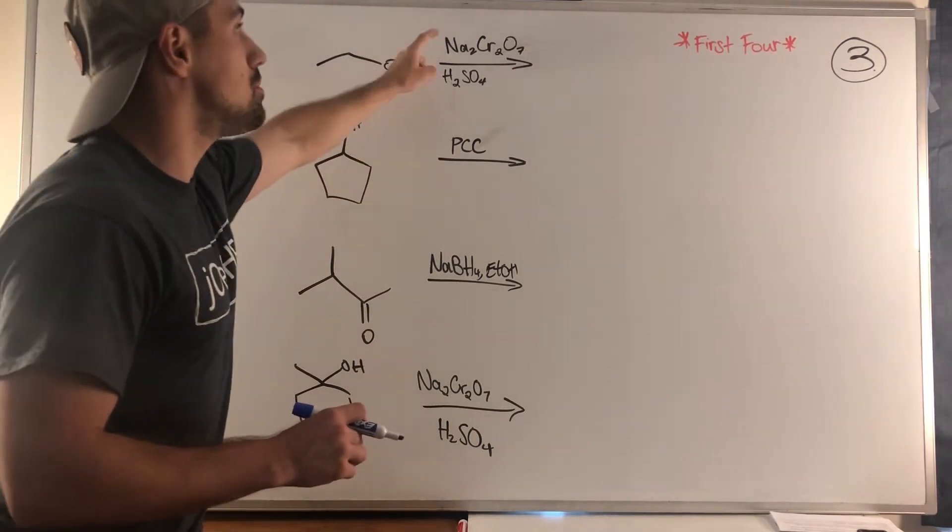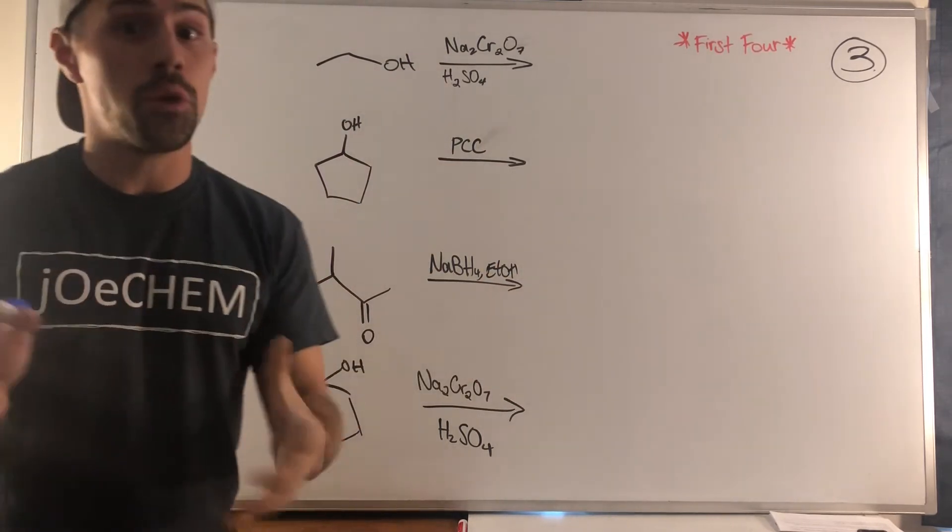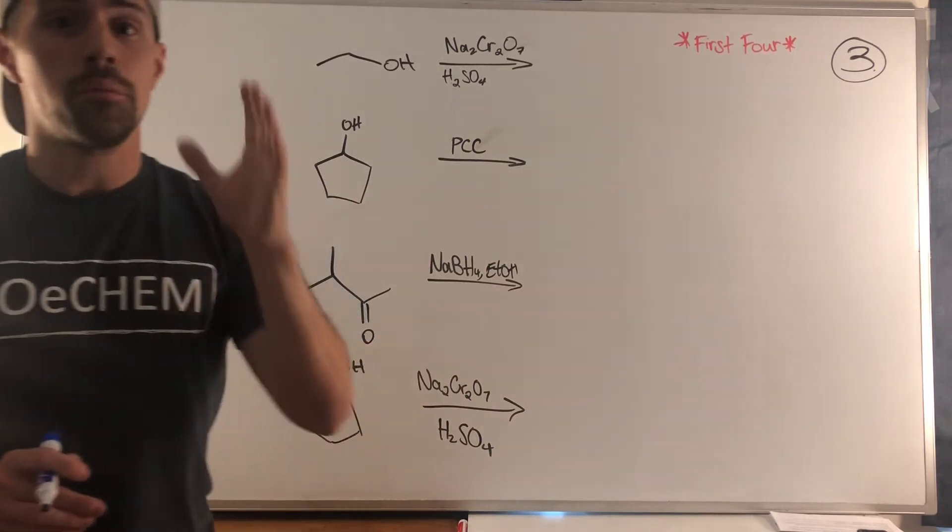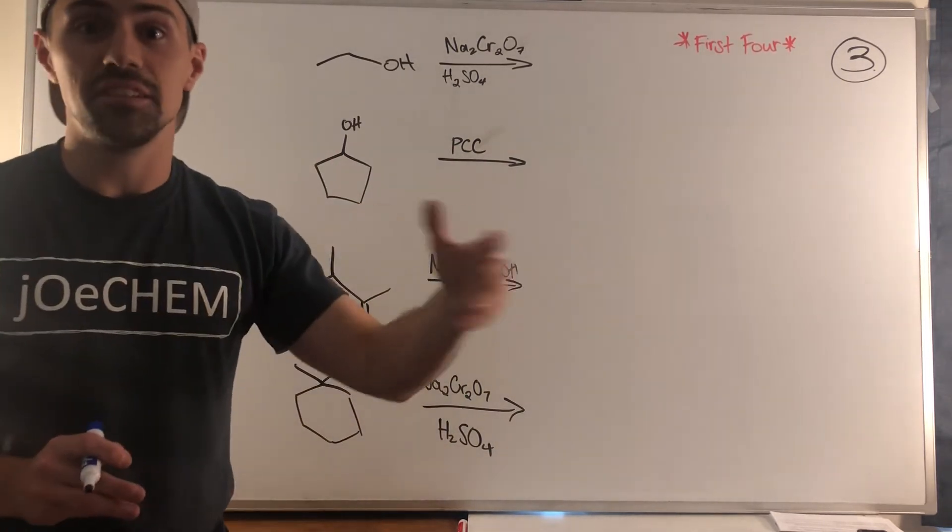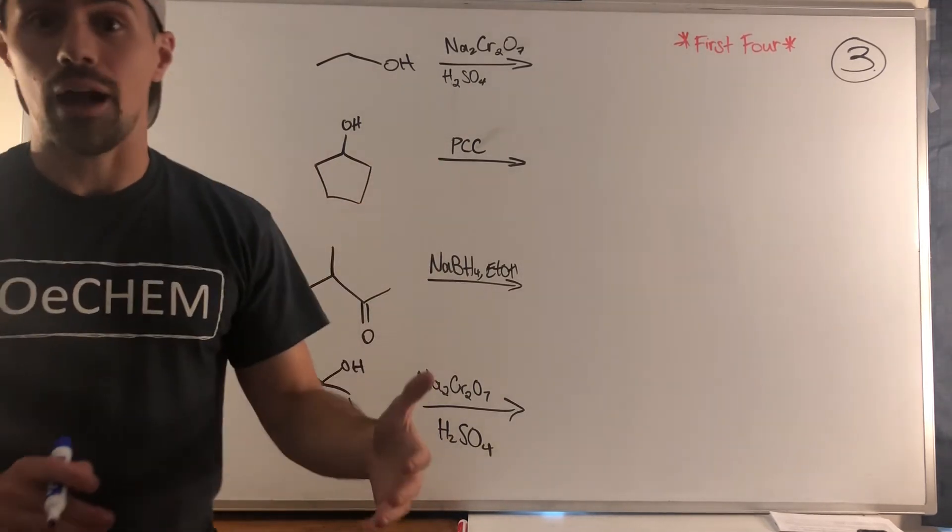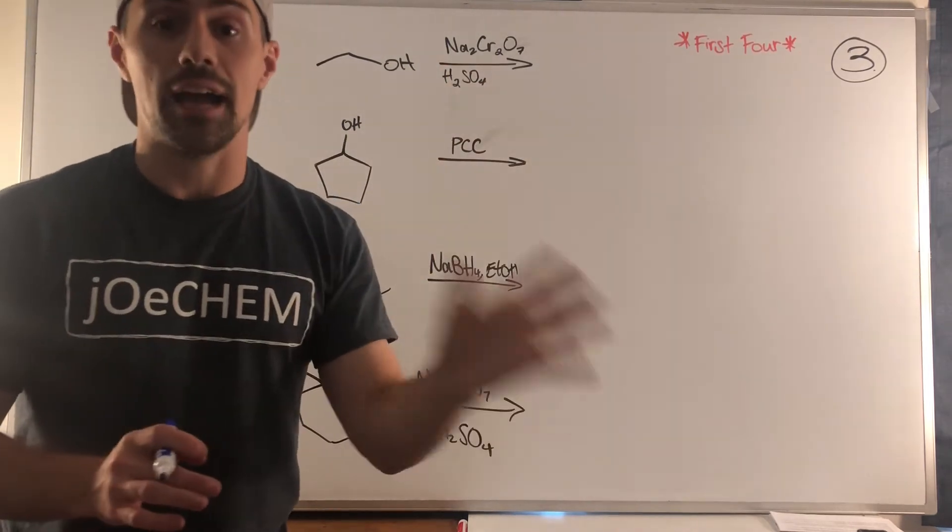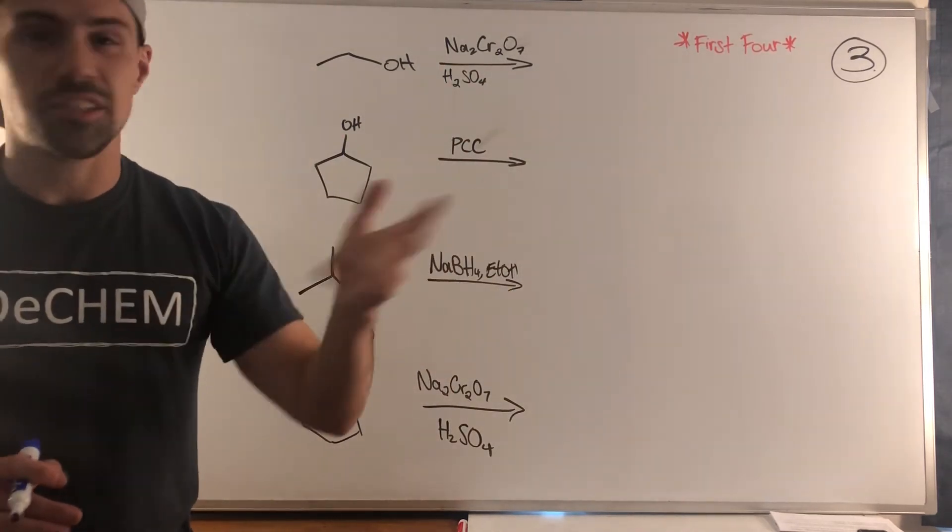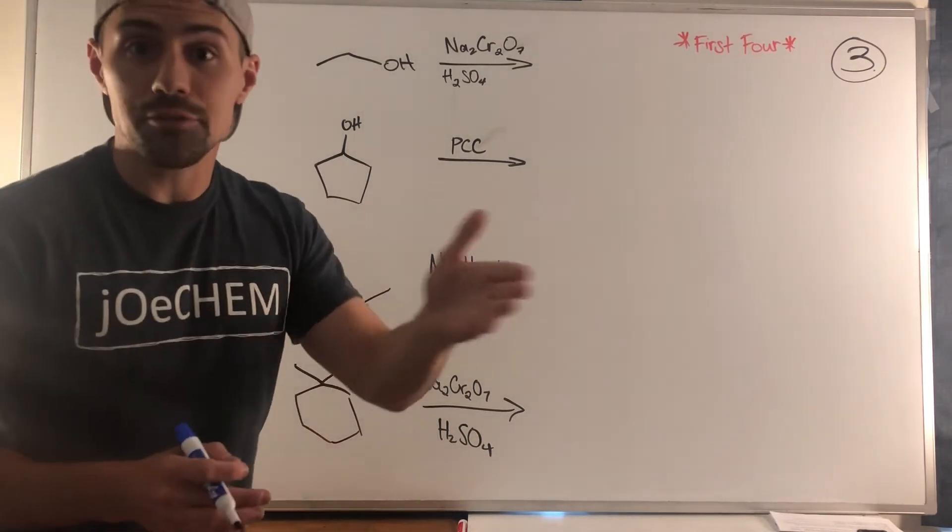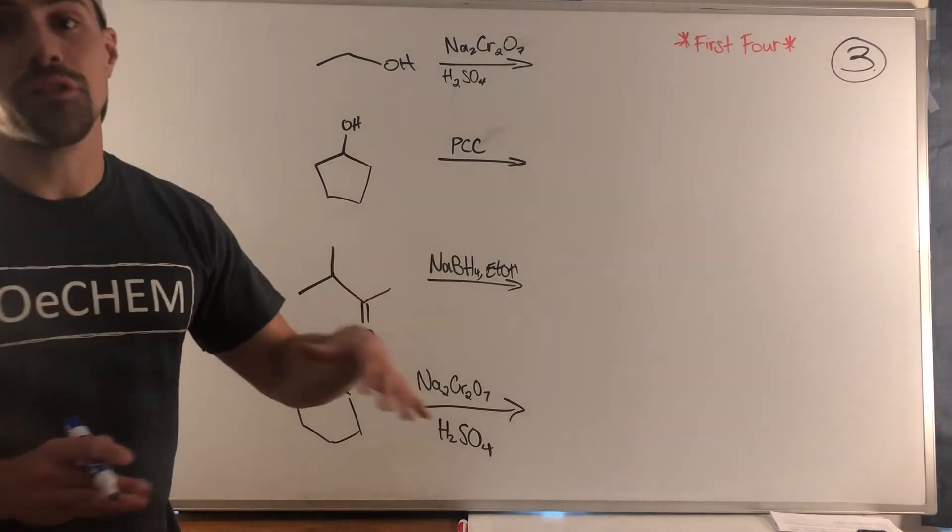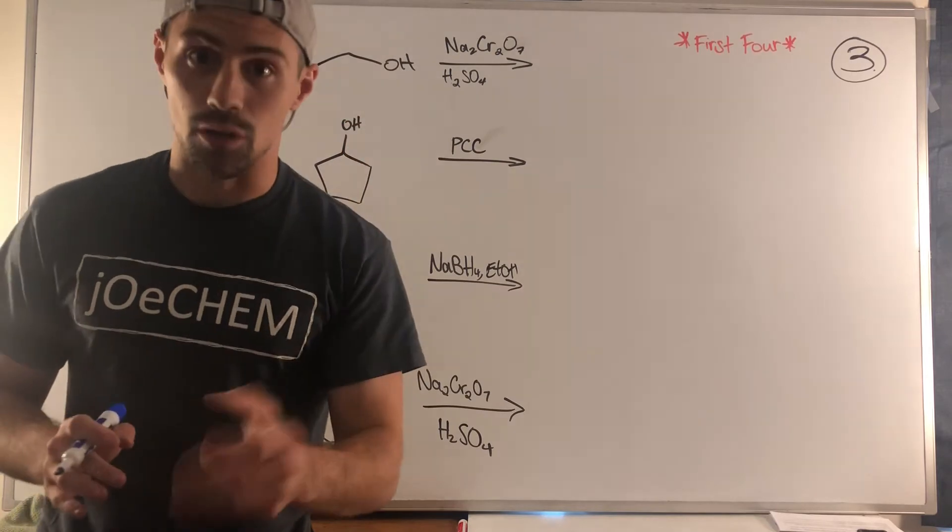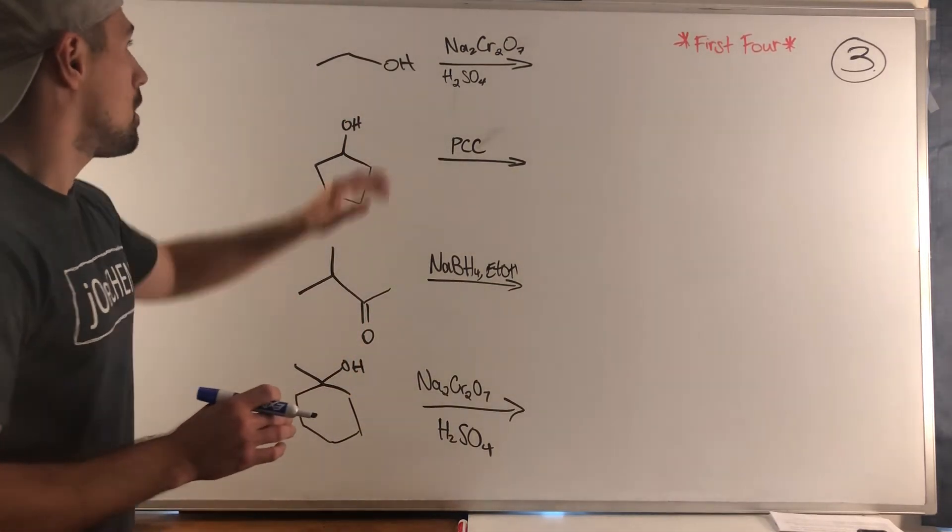Remember when we oxidize with sodium dichromate and H2SO4, commonly known as the Jones reagent, you're going to oxidize the alcohol as much as you can. Primary alcohols go to carboxylic acids and anything else will go to a ketone. If you have PCC on a primary alcohol it's only gonna stop at an aldehyde. LAH or lithium aluminum hydride with acidic workup, as well as NaBH4 and ethanol, will reduce your ketones and aldehydes back to alcohols.